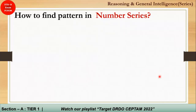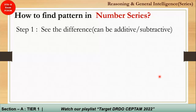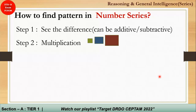The most important section of this video is how to find a pattern in a number series. The very first step is to check the difference — it can be additive or subtractive. If there is no common difference, go for multiplication. You can identify multiplication because the first number is small and subsequent numbers are very large, indicating a huge variation due to multiplication.